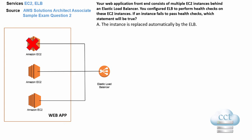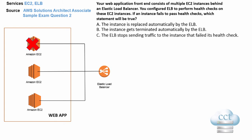They give you some choices: A — the instance is replaced automatically by the ELB; B — the instance gets terminated automatically by the ELB; C — the ELB stops sending traffic to the instance that failed its health check; and D — the instance gets quarantined by the ELB for root cause analysis.